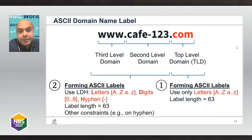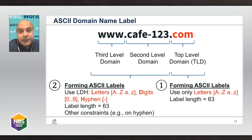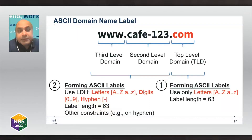We're all familiar with domain names. Here is an example of a more traditional domain name. Each domain name consists of a series of labels separated by dots. For example, www.cafe-123.com contains 'com' as the top level domain, 'cafe123' as the second level domain, and 'www' as a third level label. Collectively together they form a fully qualified domain name.